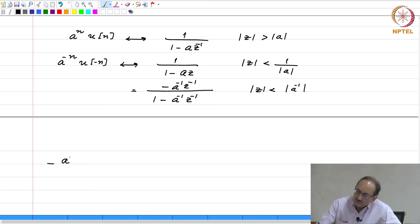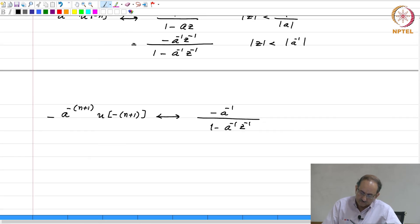Therefore, I have minus a to the, wherever n is there, I am going to replace n by n plus 1 and this is u of n plus 1. Now, I can get rid of this and now I can cancel, sorry, I can cancel one inverse factor and take this minus sign to the other side. Therefore, this becomes minus a to the minus n u of minus n minus 1. I have taken this minus sign to the other side, I have cancelled one a inverse. Therefore, this is 1 by 1 minus a inverse z inverse mod z less than mod a inverse.